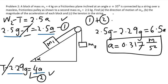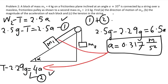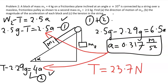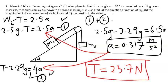Substituting the acceleration back into either equation gives the tension as 23.7 newtons. I hope these two examples have given you some idea of how to set up problems associated with an inclined plane. Thank you for watching.